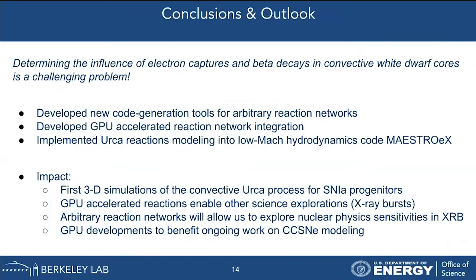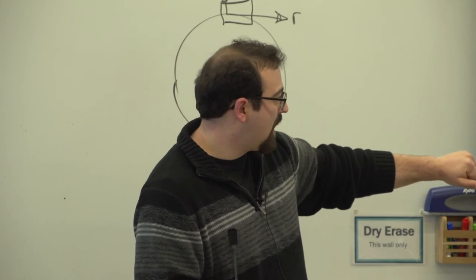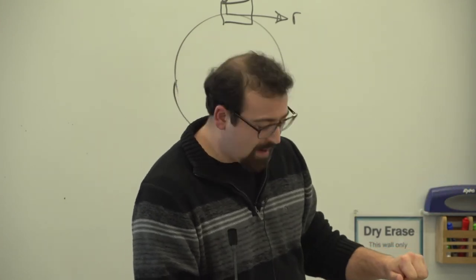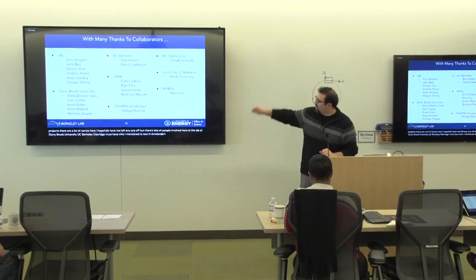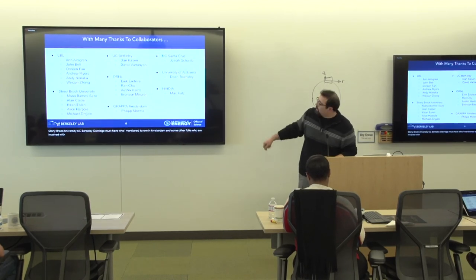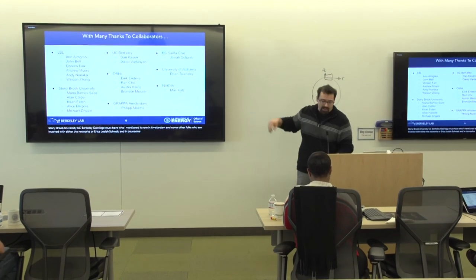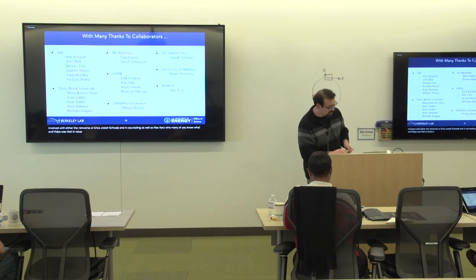In conclusion: I started out trying to determine how electron captures and beta decays influence progenitors for type 1a supernovae. Along the way I developed tools for reaction networks and GPU acceleration that are useful for many other problems like x-ray bursts and core collapse supernovae. This is ongoing work I'm excited to share. I'd like to thank all the collaborators involved: people at the lab, Stony Brook University, UC Berkeley, Oak Ridge, Philip Mosta who is now in Amsterdam, and others involved with networks or URCA — Josiah Schwab, Dean Townsley, and Max Katz at NVIDIA who was an invaluable source of conversations.